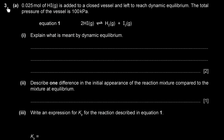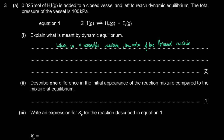Question 3, Part A: 0.025 moles of hydrogen iodide is added to a closed vessel and left to reach dynamic equilibrium at a total pressure of 100 kPa. Explain what is meant by dynamic equilibrium. Dynamic equilibrium is when, in a reversible reaction in a closed system, the rate of the forward reaction is equal to the rate of the backward reaction. This means the concentrations of products and reactants do not change over time.